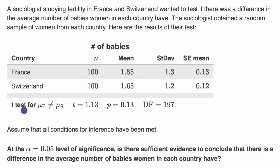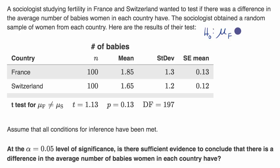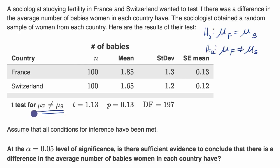Here it says t-test for the means of these different populations being different. The null hypothesis is that there's no difference in the mean number of babies that women in France have versus the mean number of babies that women in Switzerland have — that would be our null hypothesis, the no-news-here hypothesis. Our alternative would be that they are different. It's a t-test to see if we have evidence that would suggest our alternative hypothesis.